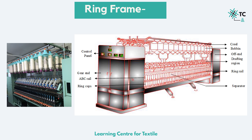You see the ring rail here? This is where the ring and traveler do the twisting and winding, like we saw in the animated video in the previous slide.